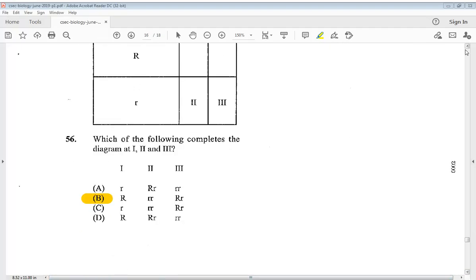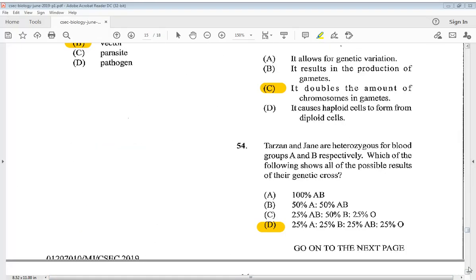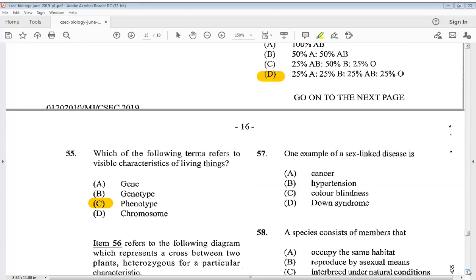Let's go to number 57. One example of a sex-linked disease is A cancer, B hypertension, C color blindness, D Down syndrome. So we know the answer is C, color blindness. Question 58: A species consists of members that - we know the answer is C, interbreed under natural conditions.